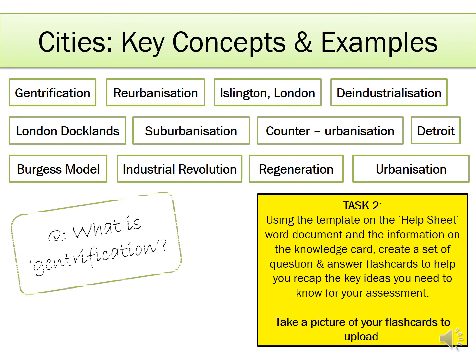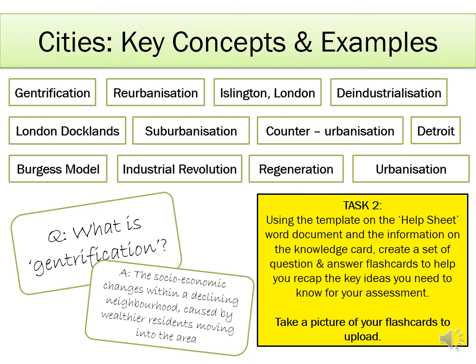What you have to do is use that template and the knowledge card to write questions on one side and answers on the other side of your flashcards. For example, you might write on one side: what is gentrification? And on the other side write: it is the social or economic changes within a declining neighbourhood caused by wealthier residents moving into the area. There are 10 questions so 10 flashcards to make, and we'd like you to take a picture of those and upload it to Class Charts. The whole point of this activity is to jog your memory about concepts from this topic and give you a resource to use to revise again and again before your assessment.